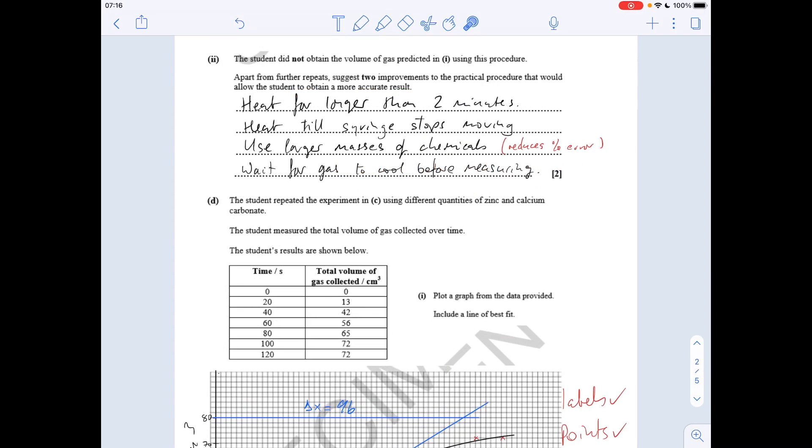The student didn't get the volume of gas predicted in the first part. Apart from further repeats, suggest two improvements to the practical procedure. Well, it says in the information that the student heated for two minutes—maybe that's not long enough. So heat for longer than two minutes would be my first choice answer. You could continue to heat until the syringe stops moving. You could use a larger mass of chemicals, and that reduces the percentage error.